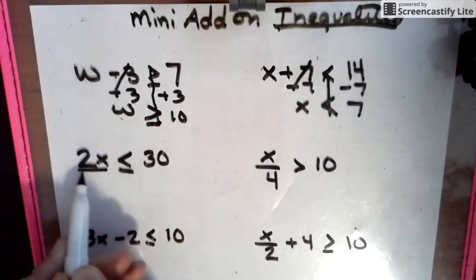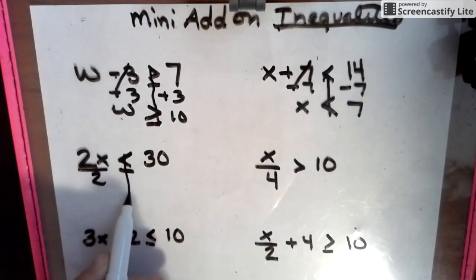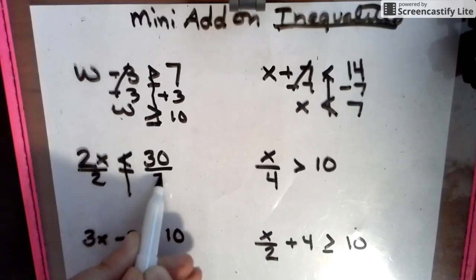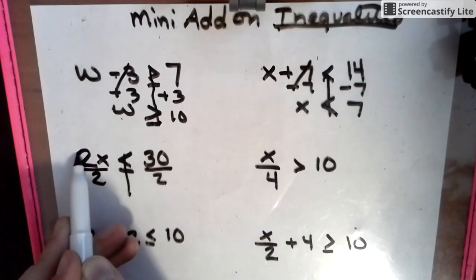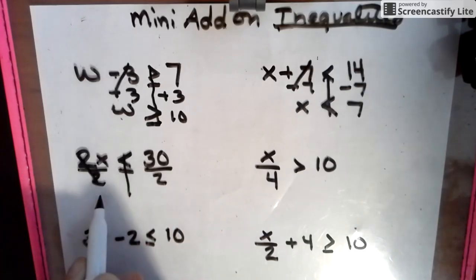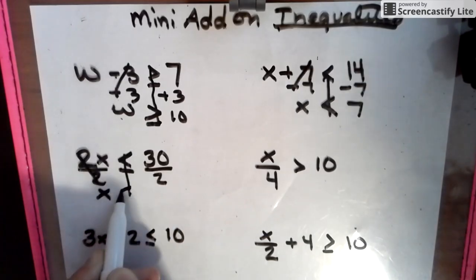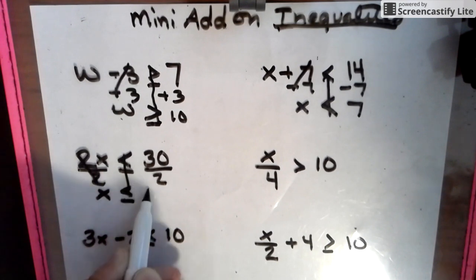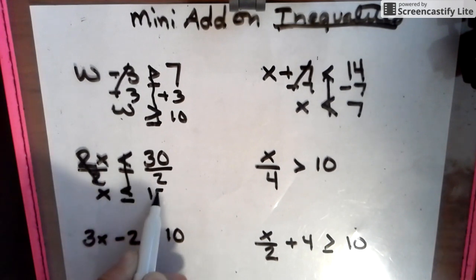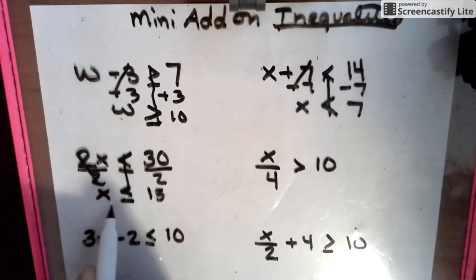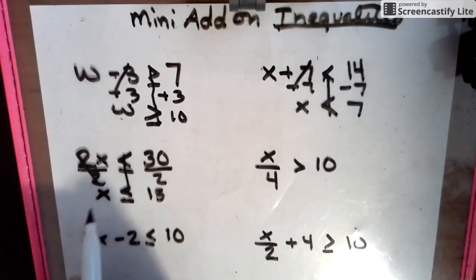Instead of timesing by 2, we're going to divide by 2. Divide by 2, keeping it balanced in a way. X is less than or equal to 15. So that means any number 15 or less works for this.